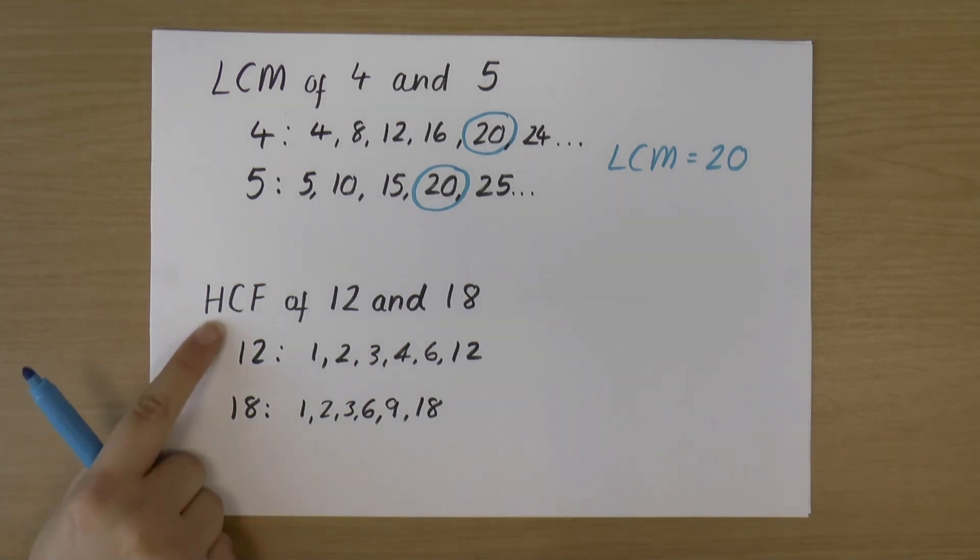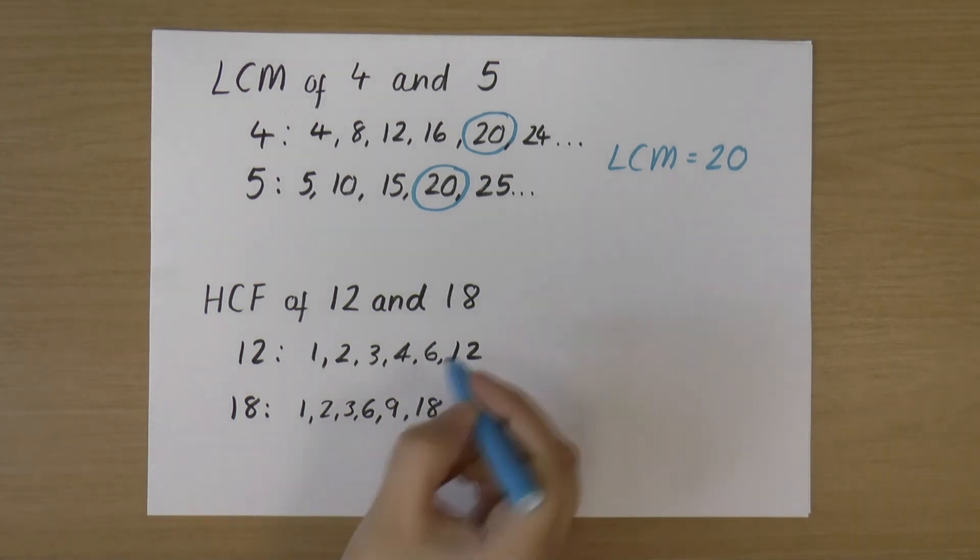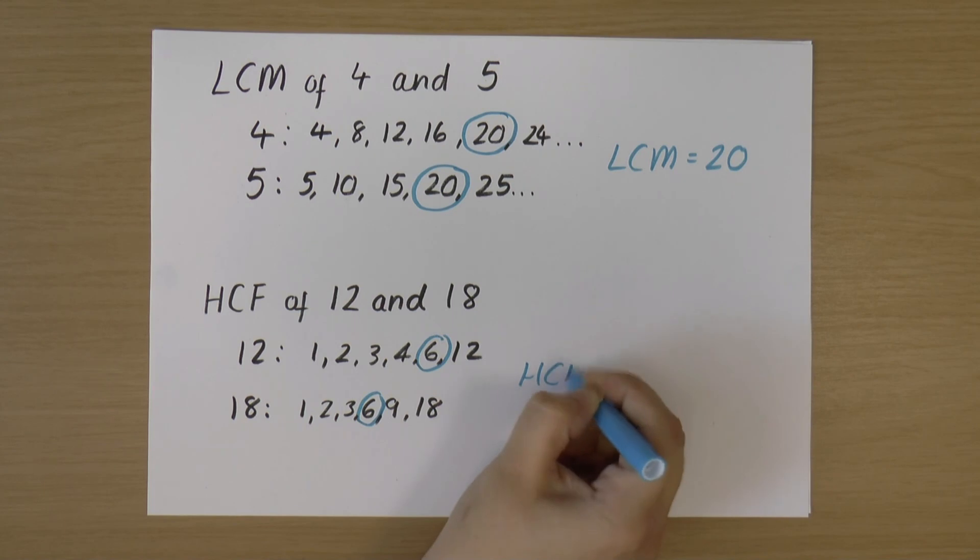Now like I said, this time we're looking for the highest number in both the lists, the highest common number, because the lowest common will always be 1, so that doesn't work. We need to find the highest. So the highest number in both of these lists is 6. Therefore, the highest common factor of 12 and 18 is 6.